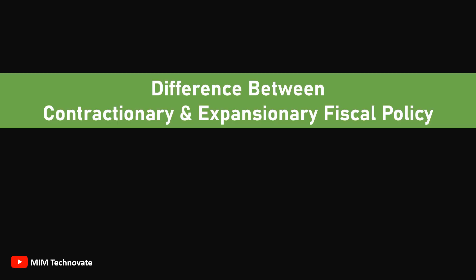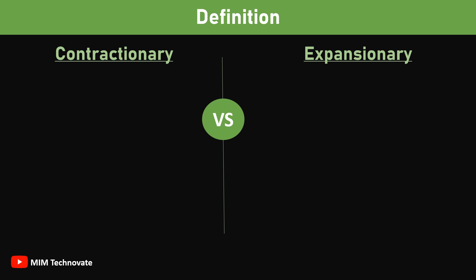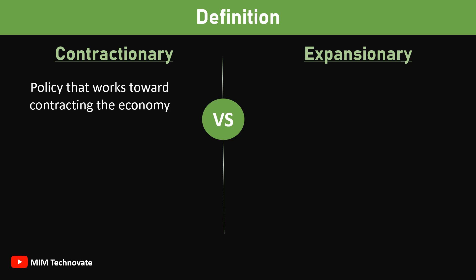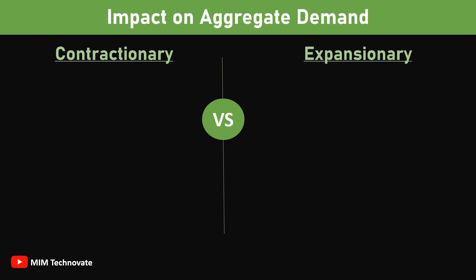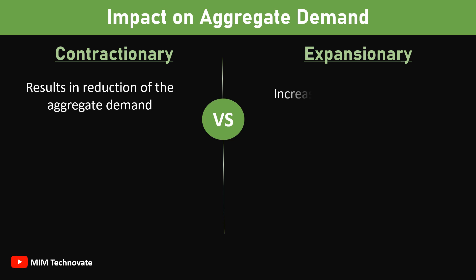Difference between contractionary and expansionary fiscal policy. Contractionary fiscal policy is defined as the type of fiscal policy that works toward contracting the economy. On the other hand, expansionary fiscal policy is defined as the policy that works towards promoting consumption in the economy and works for expansion of the economy. Regarding impact on aggregate demand: contractionary fiscal policy results in reduction of aggregate demand, whereas expansionary fiscal policy increases aggregate demand.